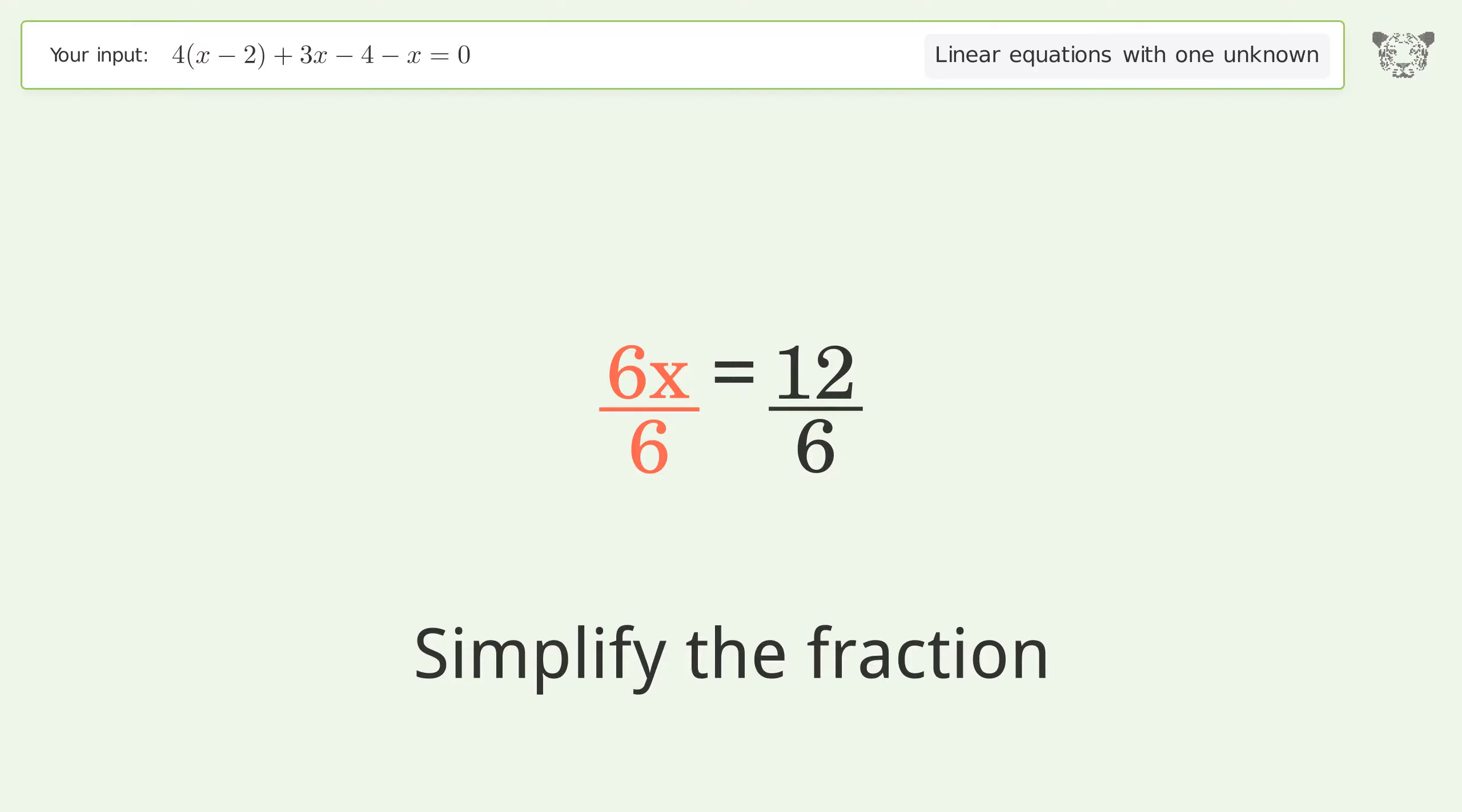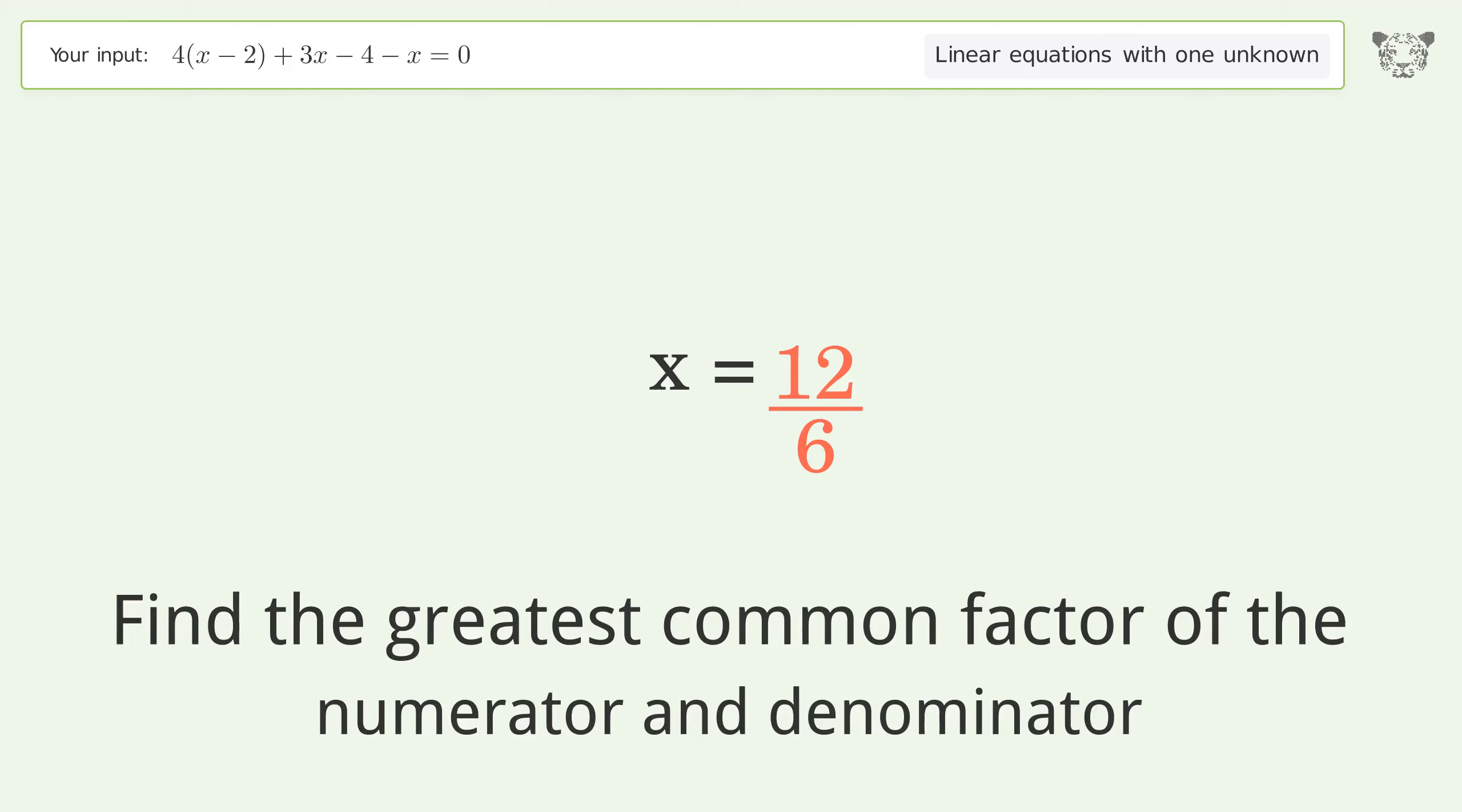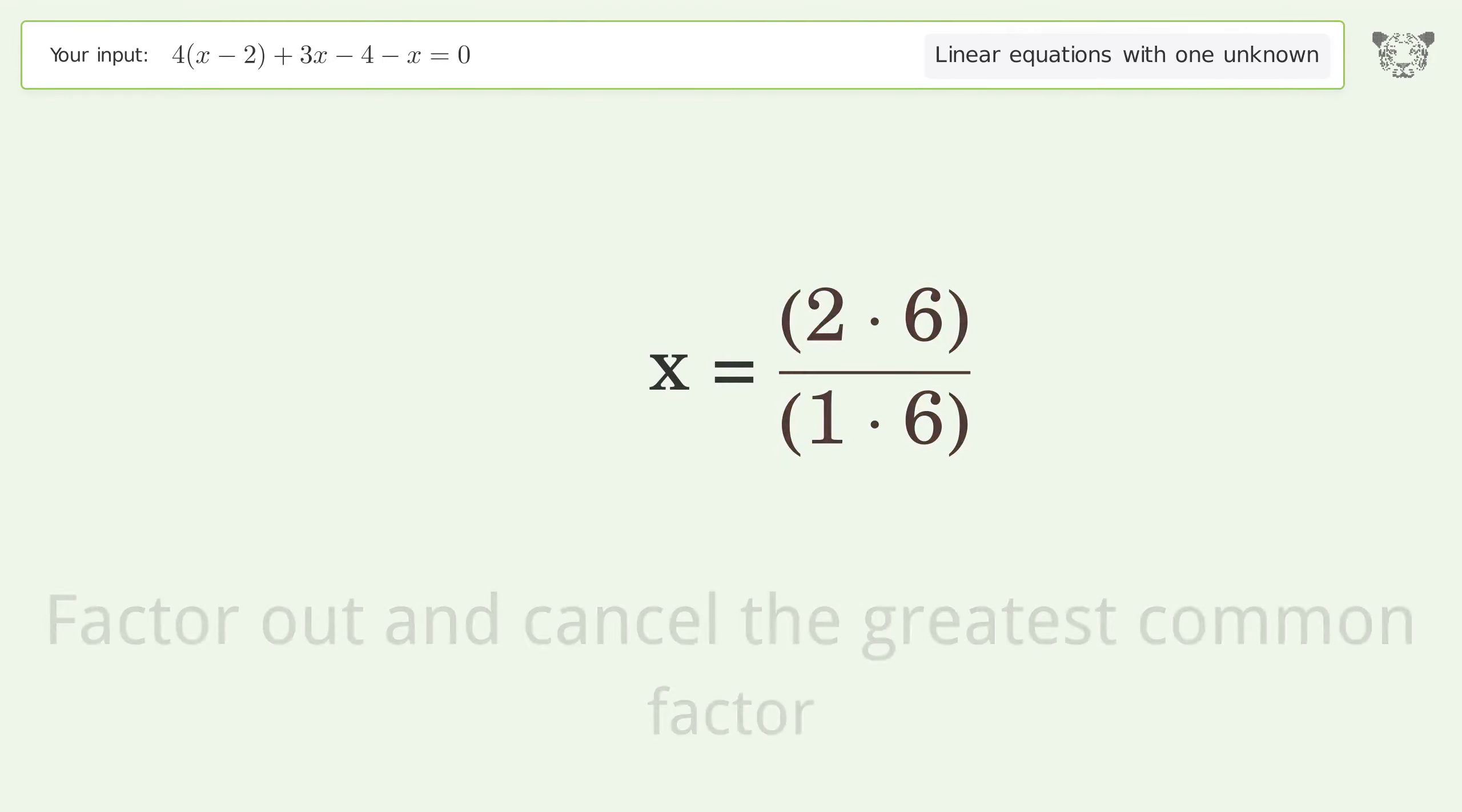Simplify the fraction. Find the greatest common factor of the numerator and denominator. Factor out and cancel the greatest common factor.